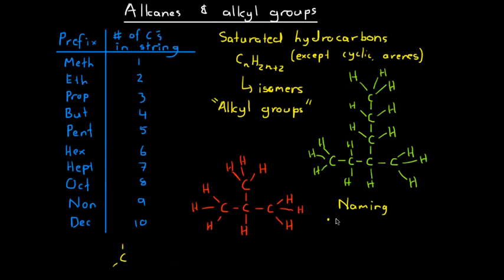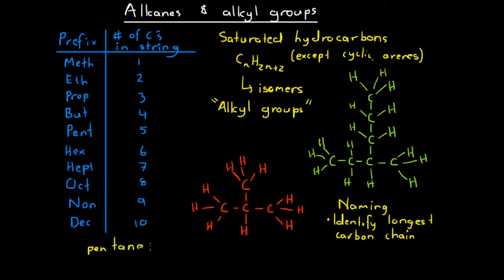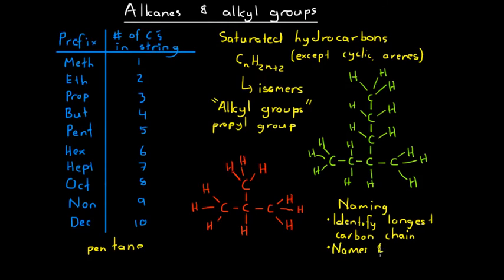The first step is to identify the longest carbon chain. If the longest carbon chain has five carbons, the stem for the name is pentane — P-E-N-T-A-N-E — by adding '-ane' to the prefix 'pent'. For alkyl groups, if the group contains three carbon atoms, the prefix is 'prop' and we call it a propyl group. That is how these prefixes work.